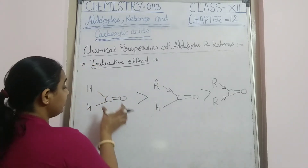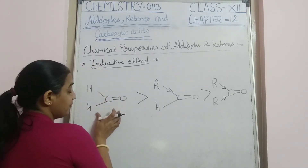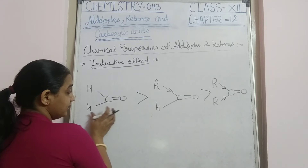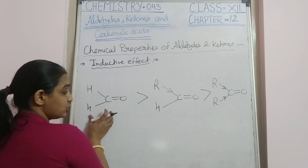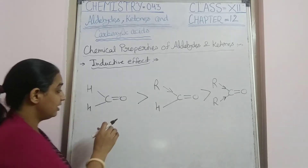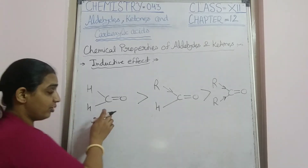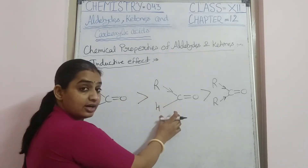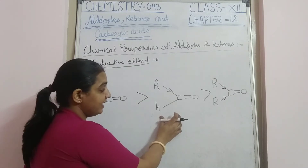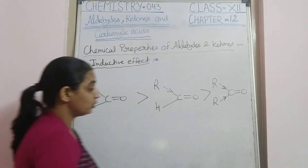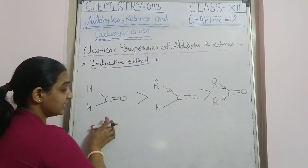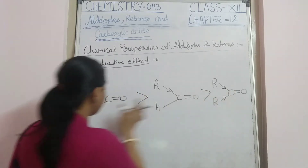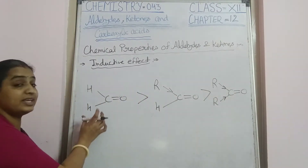Looking at the reactivity order: formaldehyde (HCHO) has the highest reactivity, followed by alkyl aldehydes, then ketones. So reactivity decreases as more alkyl groups are attached to the carbonyl carbon.